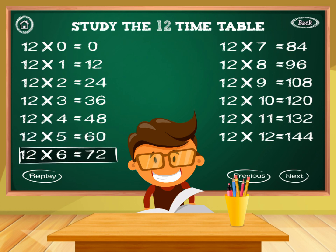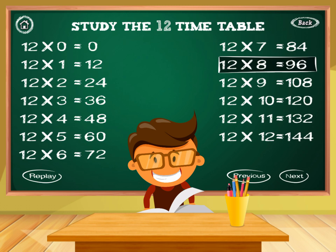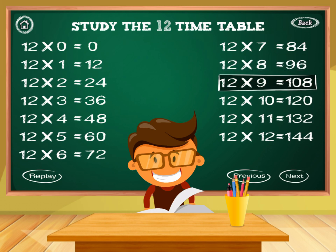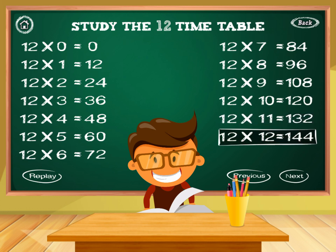12 times 6 equals 72. 12 times 7 equals 84. 12 times 8 equals 96. 12 times 9 equals 108. 12 times 10 equals 120. 12 times 11 equals 132. 12 times 12 equals 144.